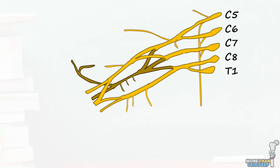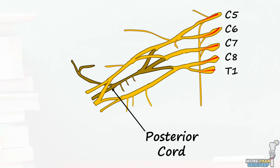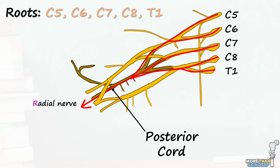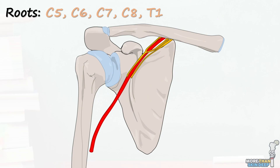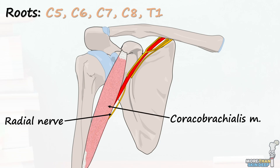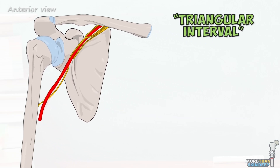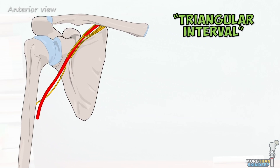It originates from the posterior cord of the brachial plexus and receives contributions from all five of its nerve roots: C5, C6, C7, C8, and T1. It exits the axilla just posterior to the axillary artery, just underneath the coracobrachialis muscle. As it does, it passes through an area known as the triangular interval.